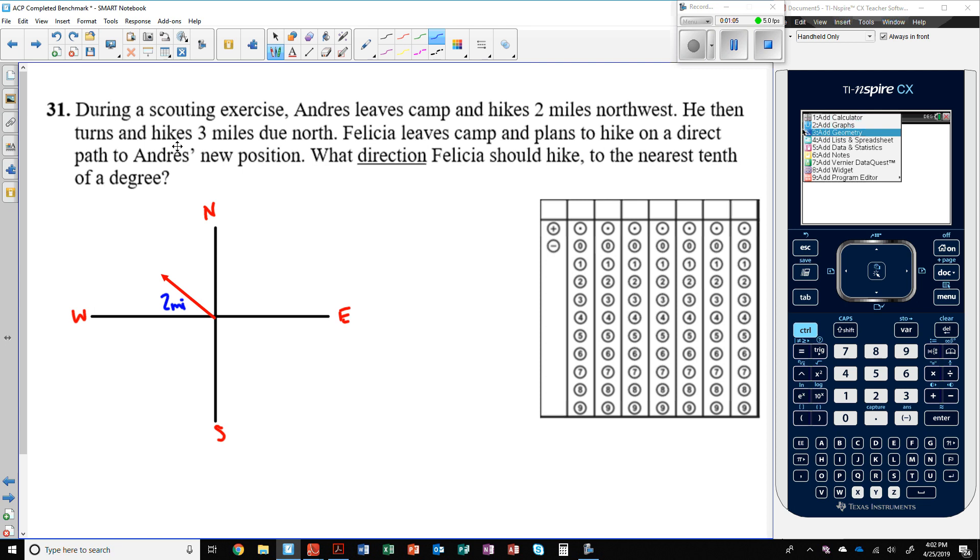And then it says he turns and walks three miles due north. So he turns and goes a further distance due north. Due north means straight north, not towards the north. It means straight north from where he is currently located.